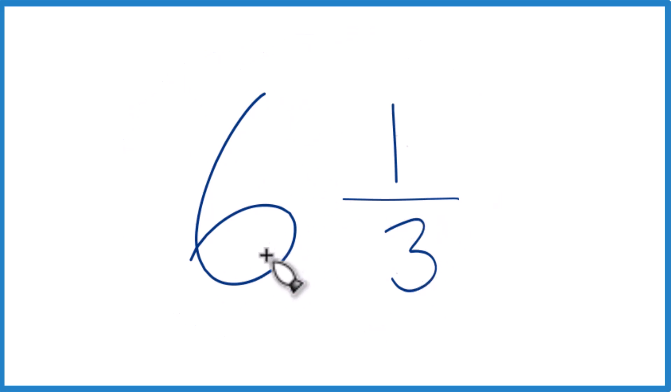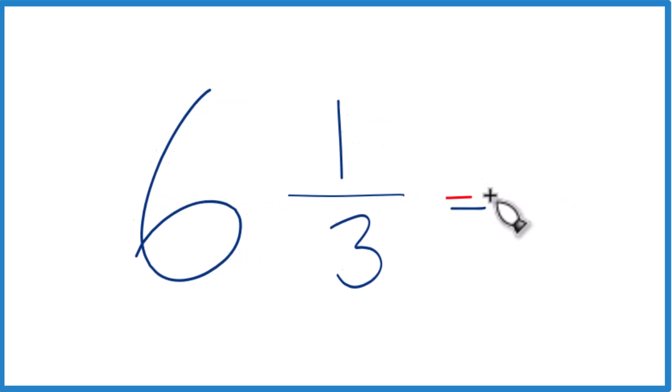Six, the whole number here, six times three is 18. 18 plus one, that equals 19.